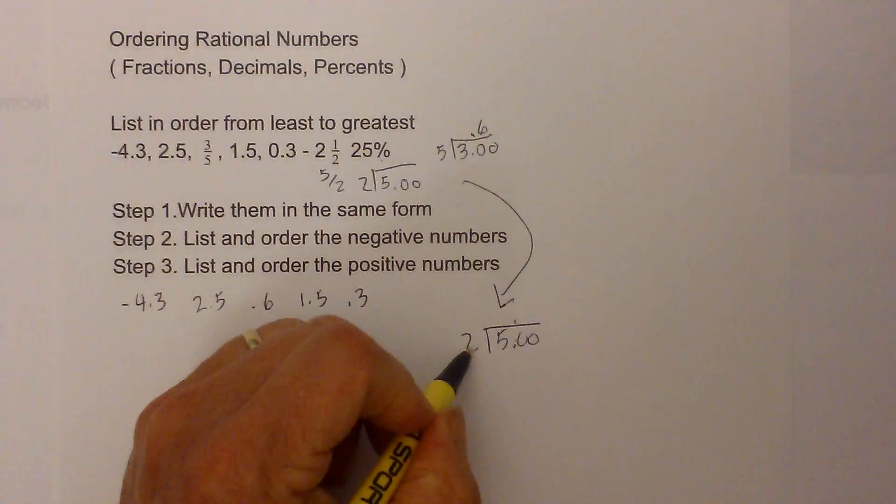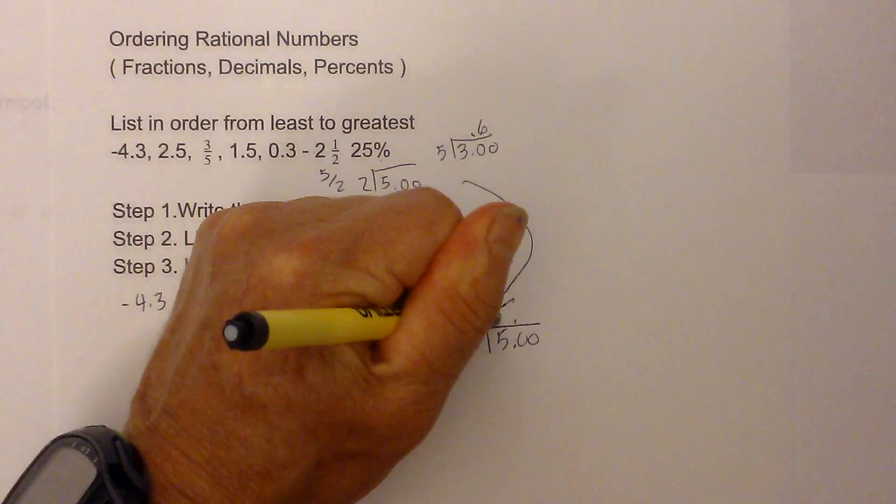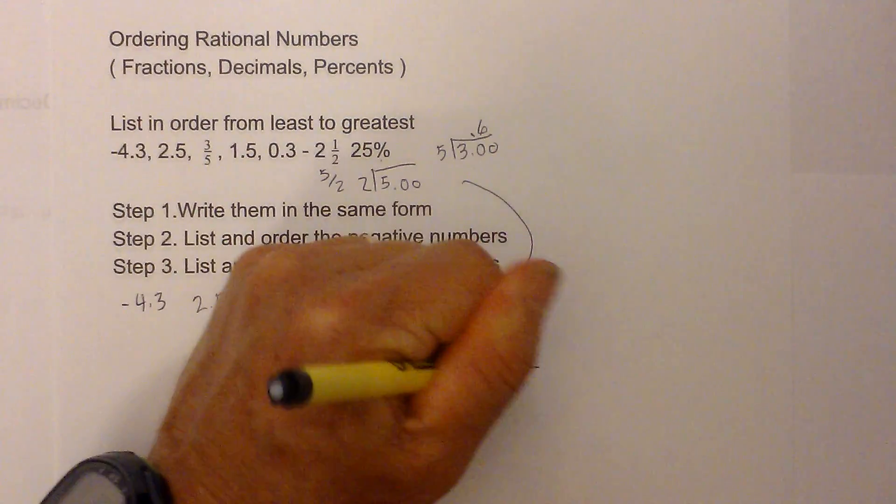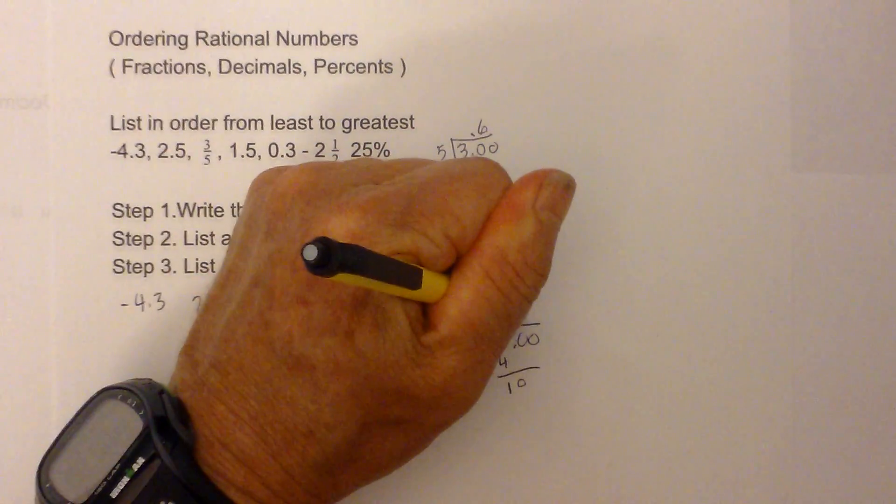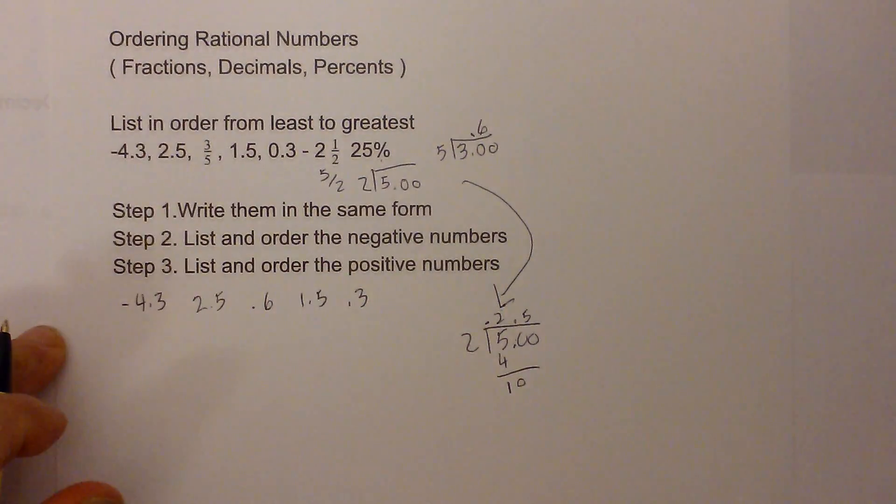Make sure to put the decimal there, 2 goes into 5 two times, 2 times 2 is 4, bring down the 1, 2 goes into 10 five times, so it becomes negative 2.5, so now I have negative 2.5.